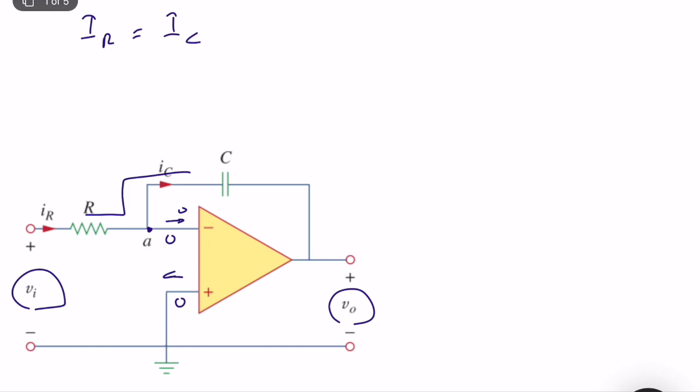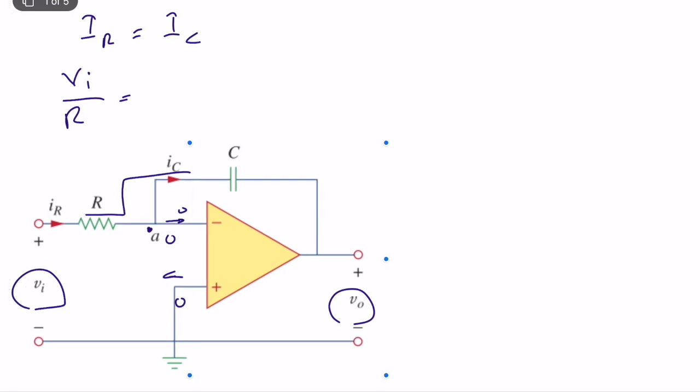So what is IR? IR is simply equal to Vi divided by R. So what is IC? We can write IC in terms of the voltage of the capacitor, in this direction. Since IC is in this direction, we write the voltage of the capacitor. Like this, this is the plus, this is VC. So, Vi divided by R is equal to C dVc over dt.